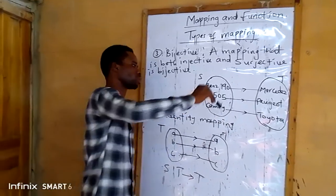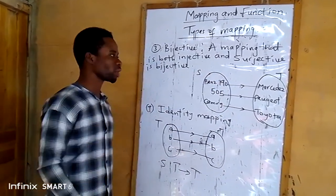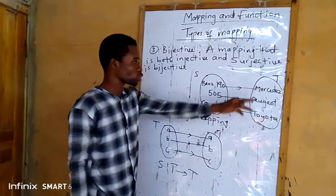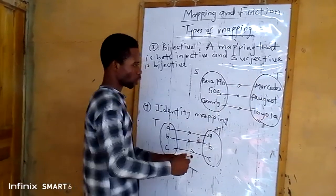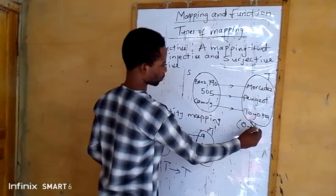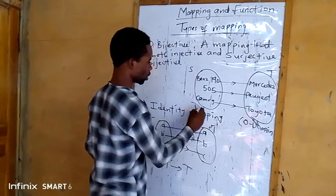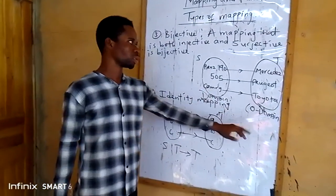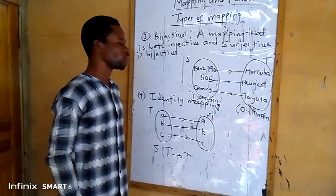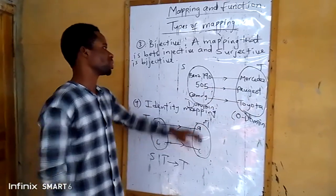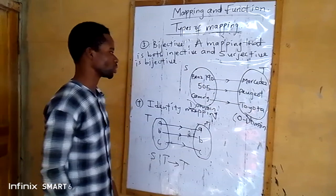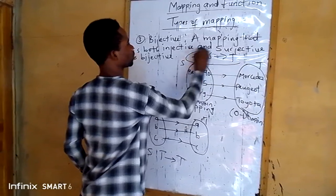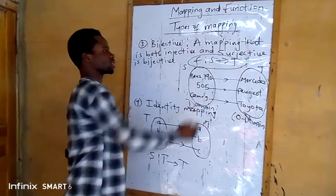We can also refer this one as surjective. Why? Because all the elements in the co-domain here are also referred to as range or image — all of them in the co-domain. When you look at the domain and co-domain, all the elements in co-domain are also referred to as image or range. That's why we call this bijective. This diagram can also be referred to as surjective, and this mapping can be referred to as both injective and surjective.